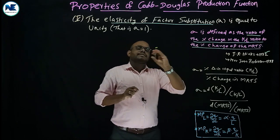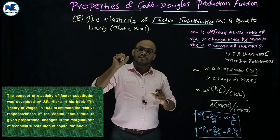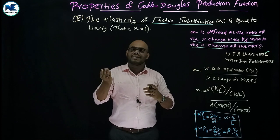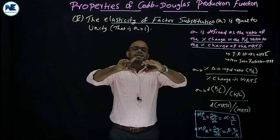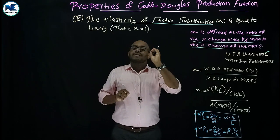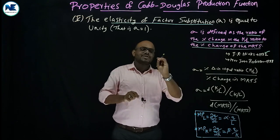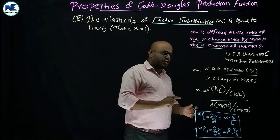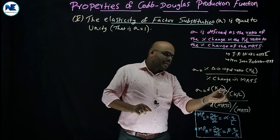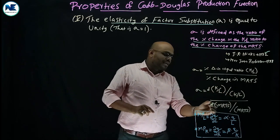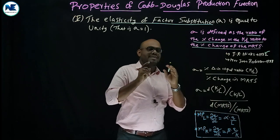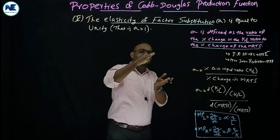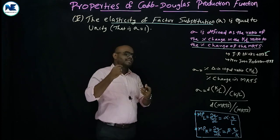The elasticity of factor substitution ranges from 0 to infinity. When σ = 0, it is impossible to substitute one input for another. Under the Cobb-Douglas production function, the elasticity of factor substitution is equal to one, or unity. The formula is: σ = [change in K/L ÷ initial K/L] ÷ [change in MRTS ÷ initial MRTS]. We are going to prove this.